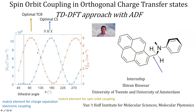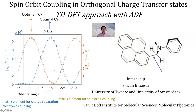These processes will both change in a complementary way, maximizing at different dihedral angles. Here we see the squared quantities: the matrix element for charge separation in blue, and the spin-orbit coupling in brown. They have a complementary behavior — at 180 degrees, charge separation is optimal, and at about 90 degrees, the spin-orbit coupling is optimal.